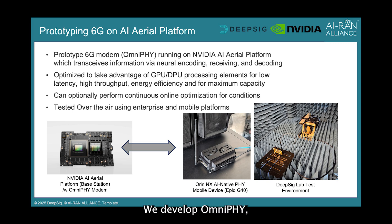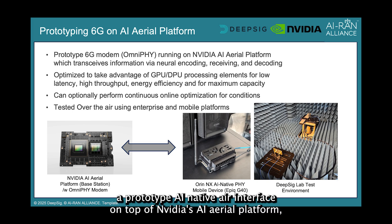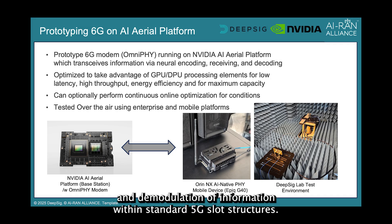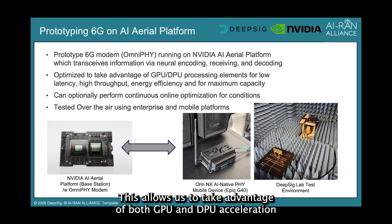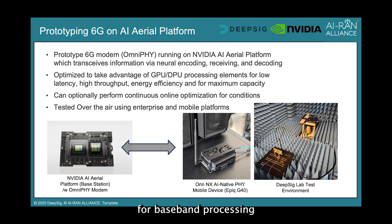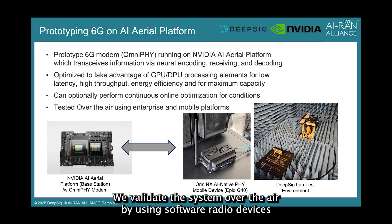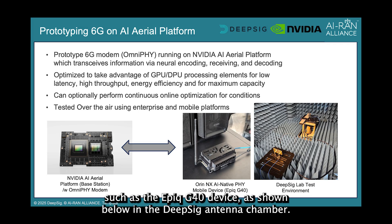We develop OmniFi, a prototype AI-native air interface, on top of NVIDIA's AI Aerial platform, which leverages machine learning for modulation, reception, and demodulation of information within standard 5G slot structures. This allows us to take advantage of both GPU and DPU acceleration for baseband processing on virtualized RAN infrastructure, as well as small mobile devices. We validate the system over the air by using software radio devices, such as the EPIC G40 devices shown in the DeepSig antenna chamber.